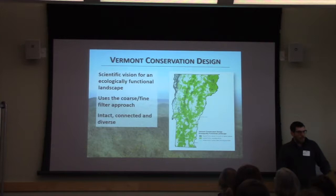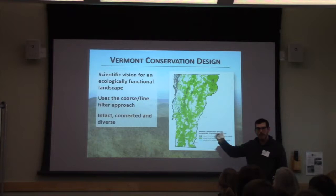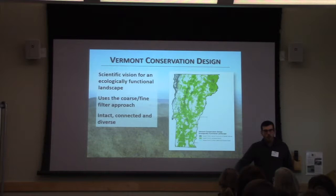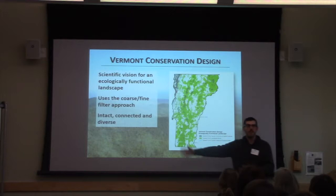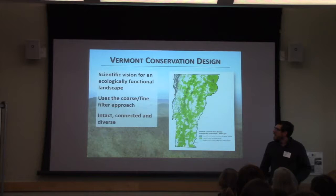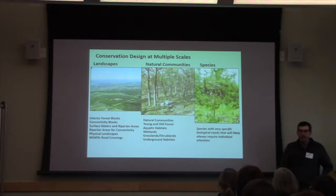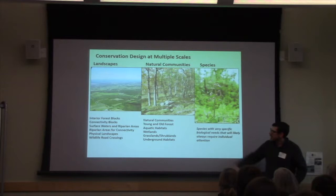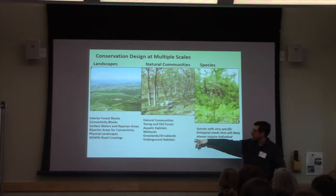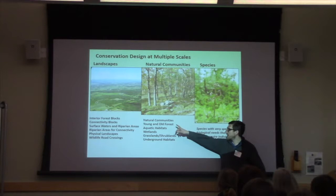Over the past couple of years, the Fish and Wildlife Department and a number of partners have been working on a big vision: what are all these coarse filters? Can we come up with a list of the best coarse filters across the Vermont landscape that would conserve those 20,000 to 40,000 species, even facing threats like habitat fragmentation and climate change? The outcome of that work was the Vermont Conservation Design — a vision for a landscape based on about 12 different coarse filters at different scales, from forest blocks and riparian areas down to natural communities, wetlands, grasslands, and — getting us on topic — young and old forest.